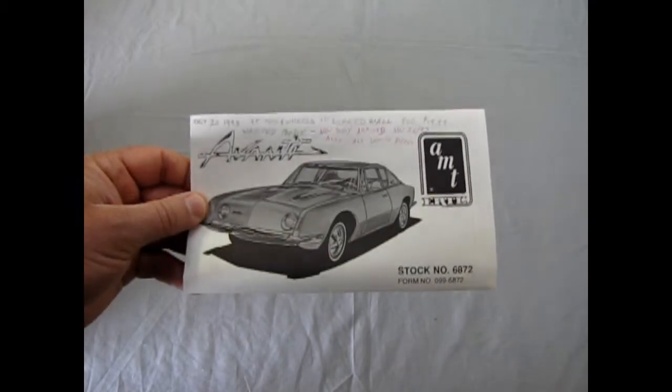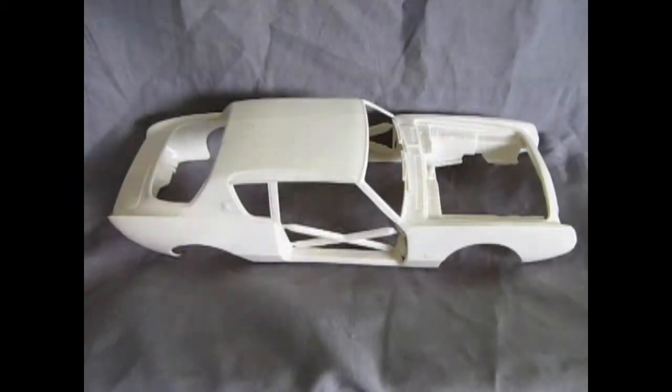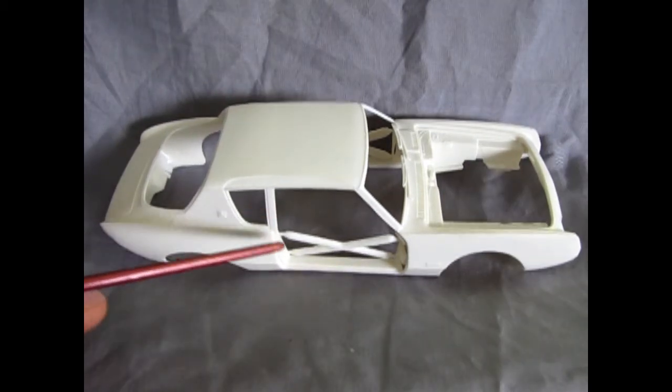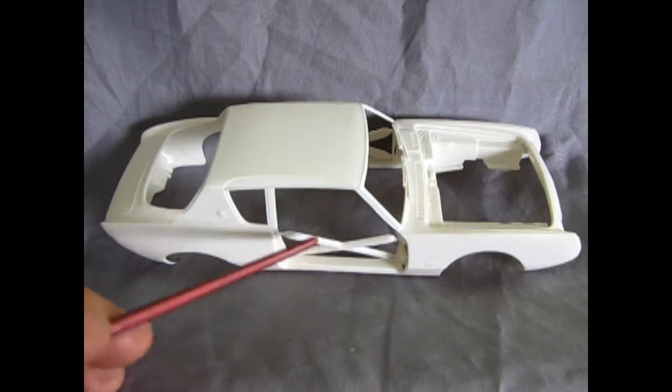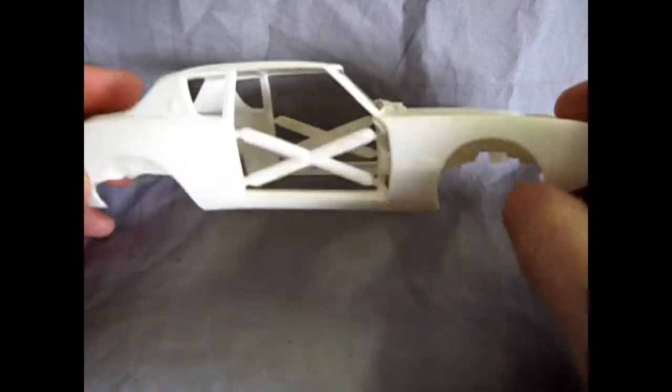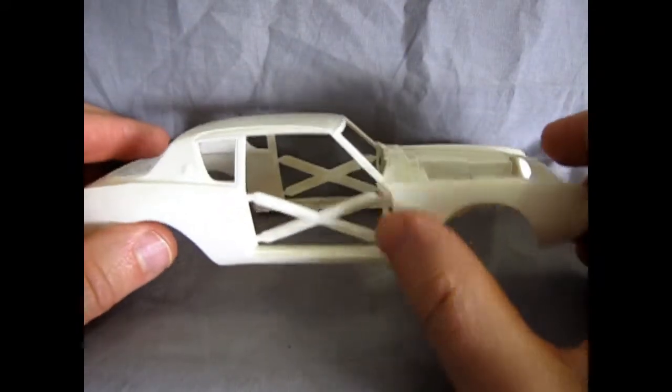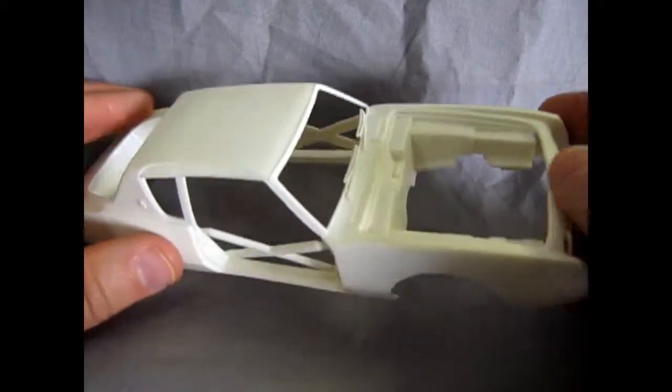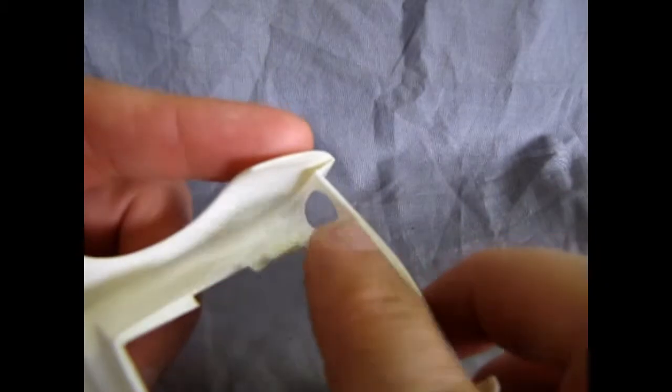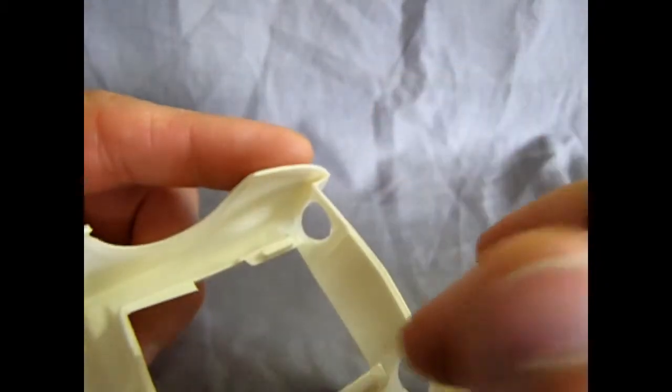And now let's go down and check out the plastic components. All right, so here we have the Studebaker Avanti body. And it, again, like last week's Chrysler turbine, is one of these ones that has opening doors and an opening hood. The trunk lid doesn't open, but that's okay. You can see sort of a difference in the way the bodies were made from the turbine from last week. The front fenders are attached on the AMT kit, which is okay because you got this big panel in the front here.